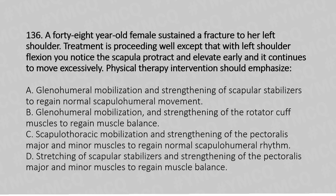Option B — glenohumeral mobilization and strengthening of rotator cuff muscles to regain muscle balance. Option C — scapulothoracic mobilization and strengthening of the pectoralis major and minor muscles to regain normal scapulohumeral rhythm. Option D — stretching of the scapula stabilizers and strengthening of the pectoralis major and minor muscles to regain muscle balance.